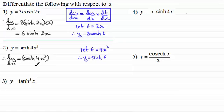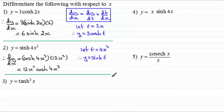So we've got that. And now we need to multiply it by dt/dx, and if we differentiate 4x cubed with respect to x, that's going to be 12x squared. And tidying this one up gives us 12x squared multiplied by the cosh of 4x cubed. So there's another one there.